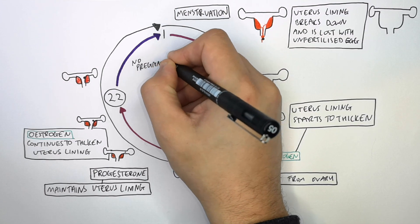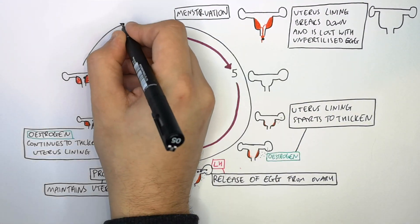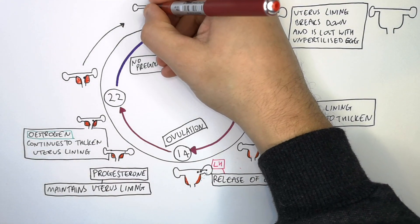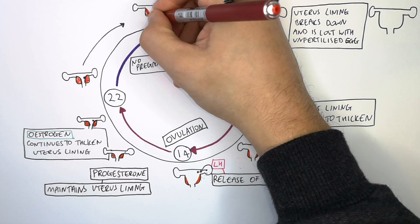If the female is not pregnant, progesterone levels drop and the uterus lining is no longer maintained. This means she will then enter menstruation, which is days 1 to 5 of the new menstrual cycle.